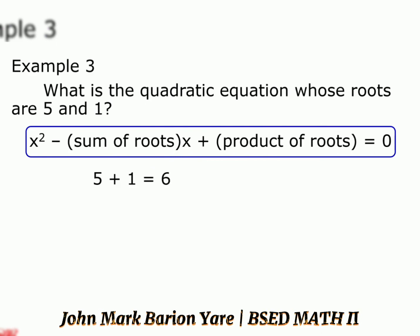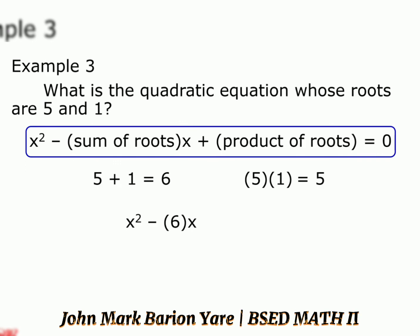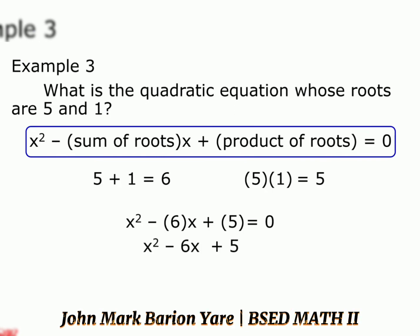The product of the roots, 5 times 1, is equal to 5. Then we have x squared minus 6 times x plus 5 equals 0, which gives us x squared minus 6x plus 5 equals 0.